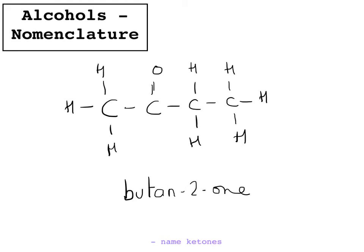Actually, for a ketone with 4 carbons, the ketone group can only be on the second carbon, because if it's on the end carbon it would be an aldehyde. So you could call this butanone and still have no ambiguity.